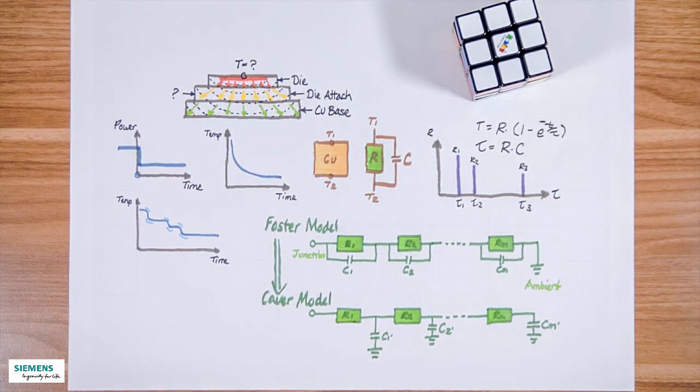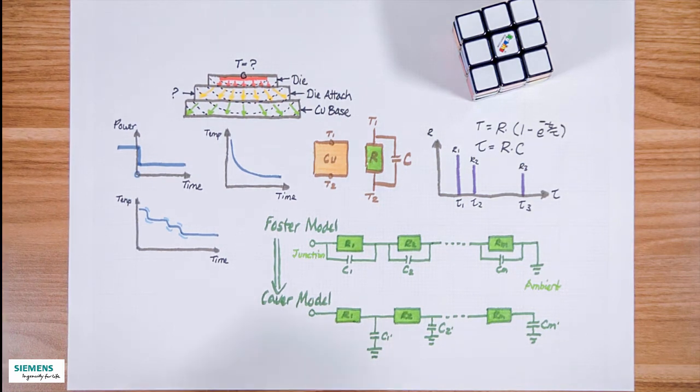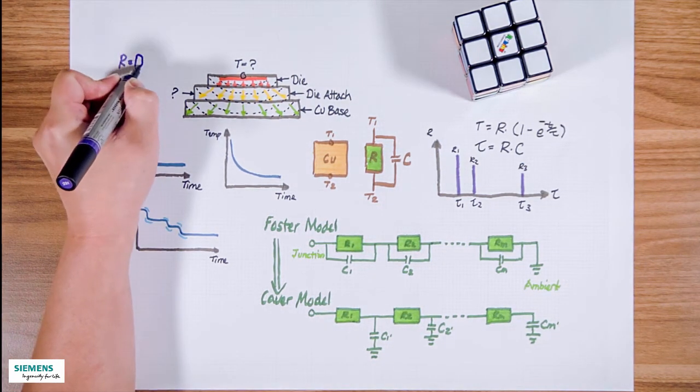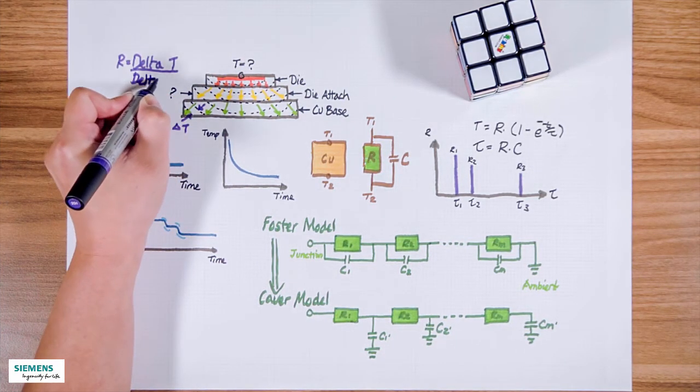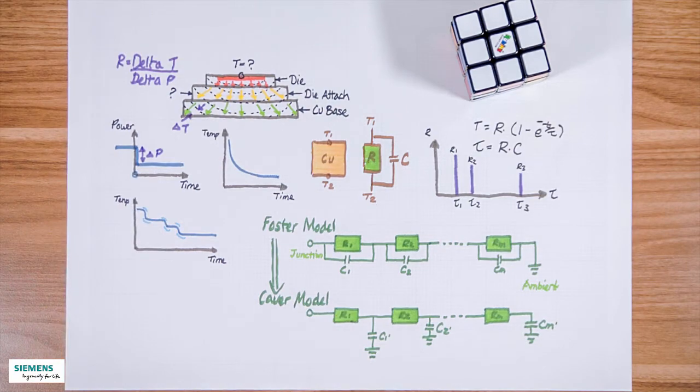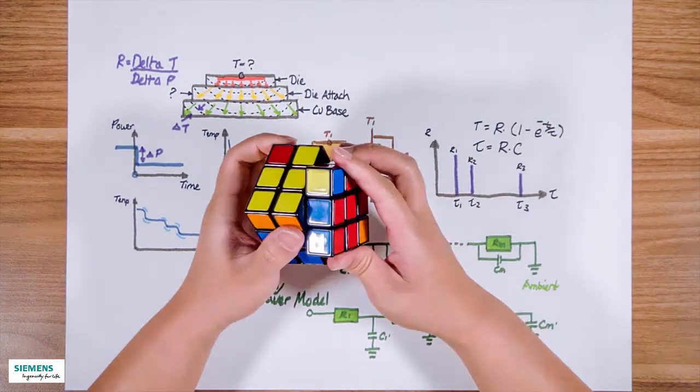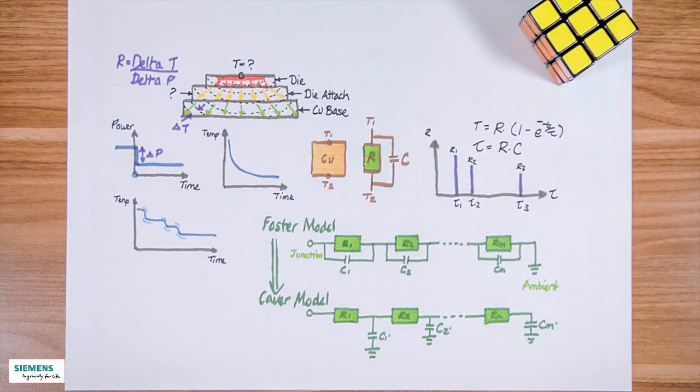the structure can be very easily seen. The thermal resistances are defined between two isotherms, such as the delta T between here and divided by the delta P. The thermal capacitance is proportional to the volume between the two isotherms. For example,